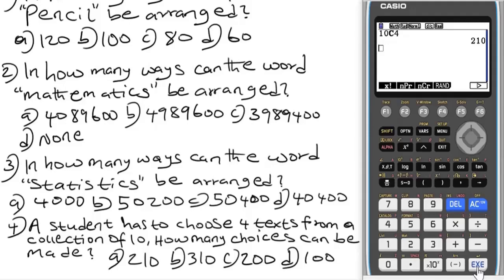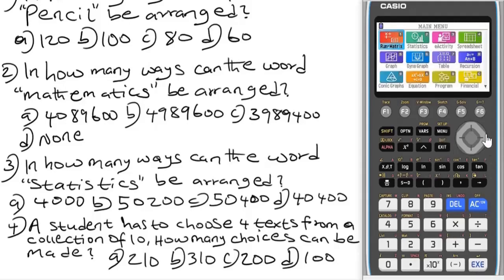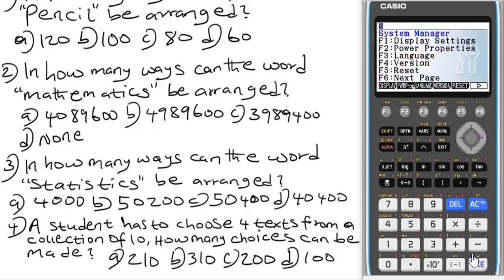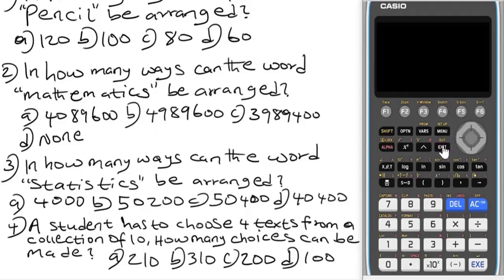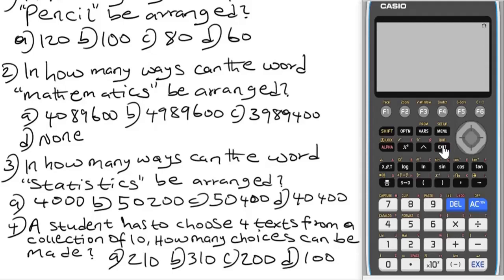That's it for this class. Now, once you are done, ensure you reset the calculator to remove the values you worked with. To do that, press menu, then go to system, press EXE, then F5, F6, F2, F1, so that it will begin to initialize. Once it's done, see you in the next video.